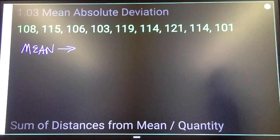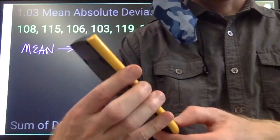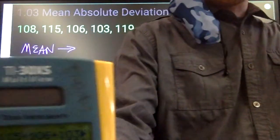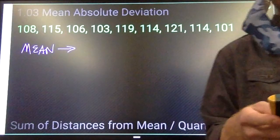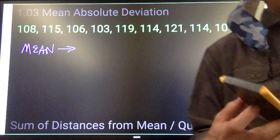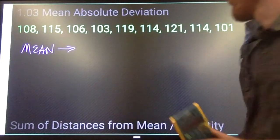I'm adding all these numbers together, get 1001, then I'll divide by 9. 111.2 is my mean.